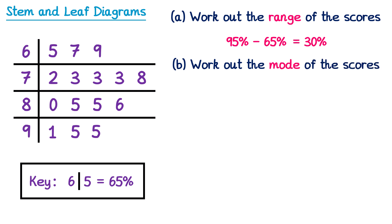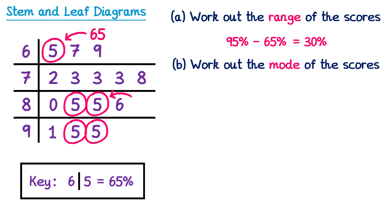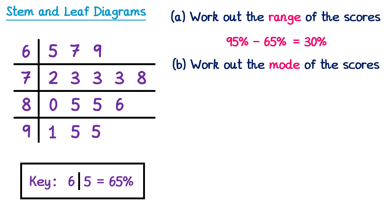You could also be asked to find the mode. A common mistake is to look at the leaves and find the most frequently occurring digit — the number 5 appears five times. However, these 5s don't all represent the same number: one 5 is 65%, some are 85%, and others are 95%. To find the mode you look for the number that appears most times within a given row. The three 3s are all in the same row, all representing 73%, so the mode is 73%.